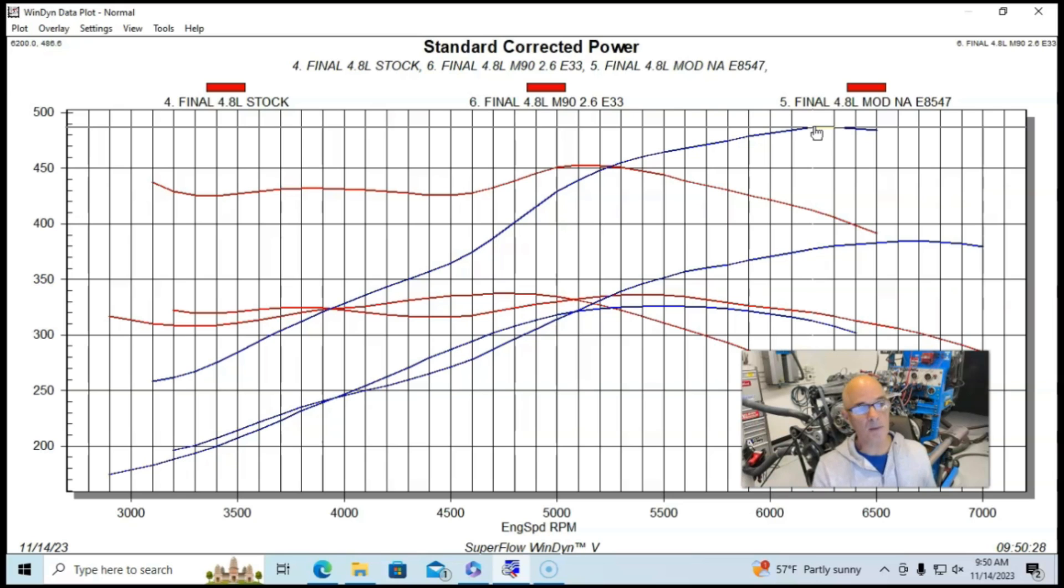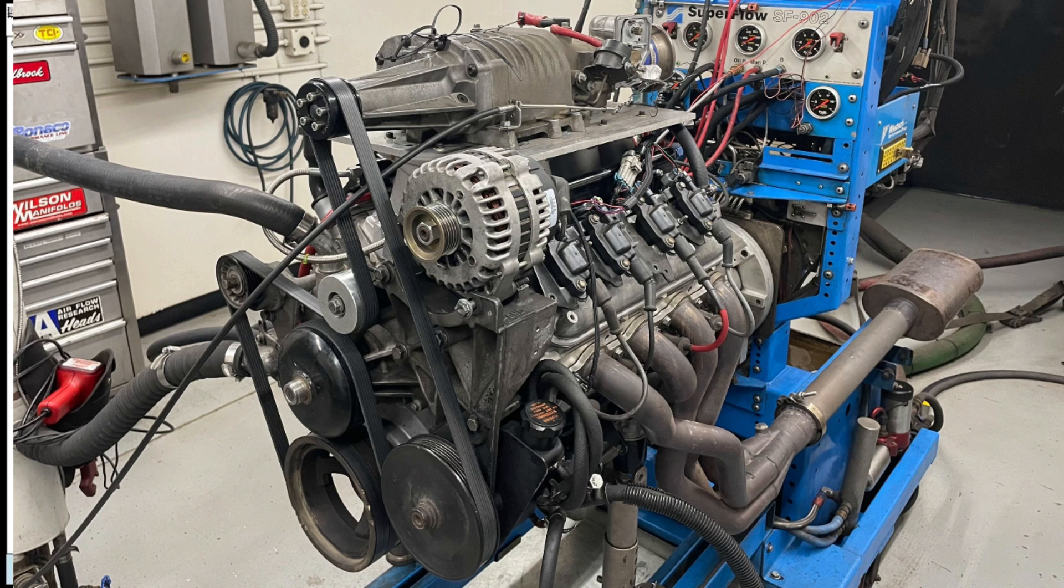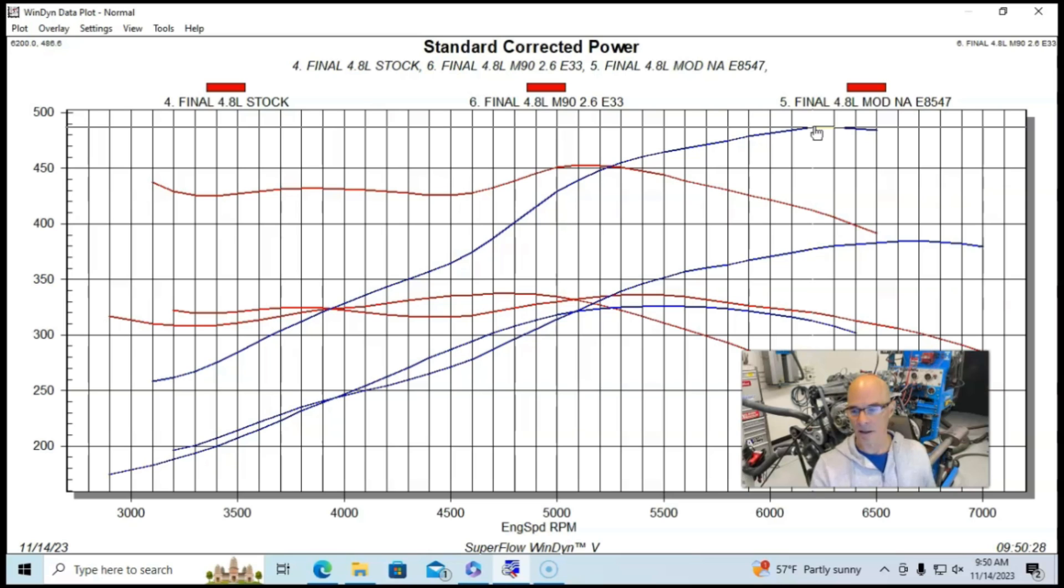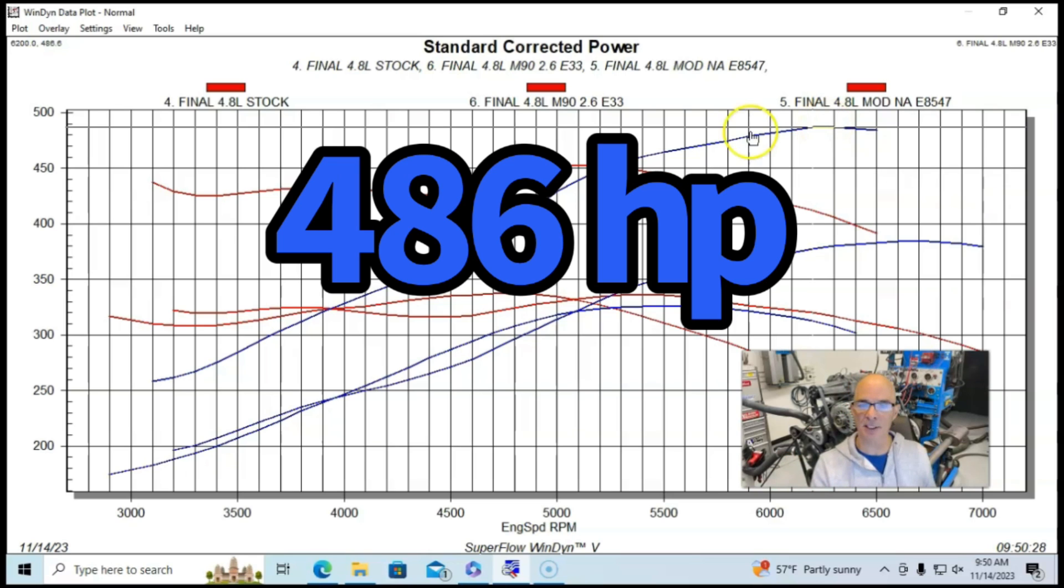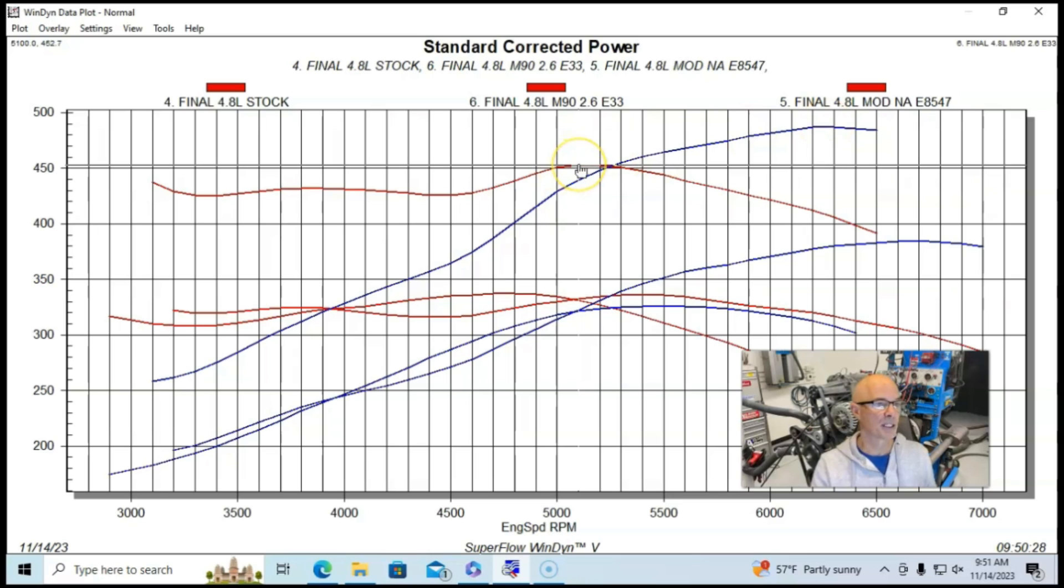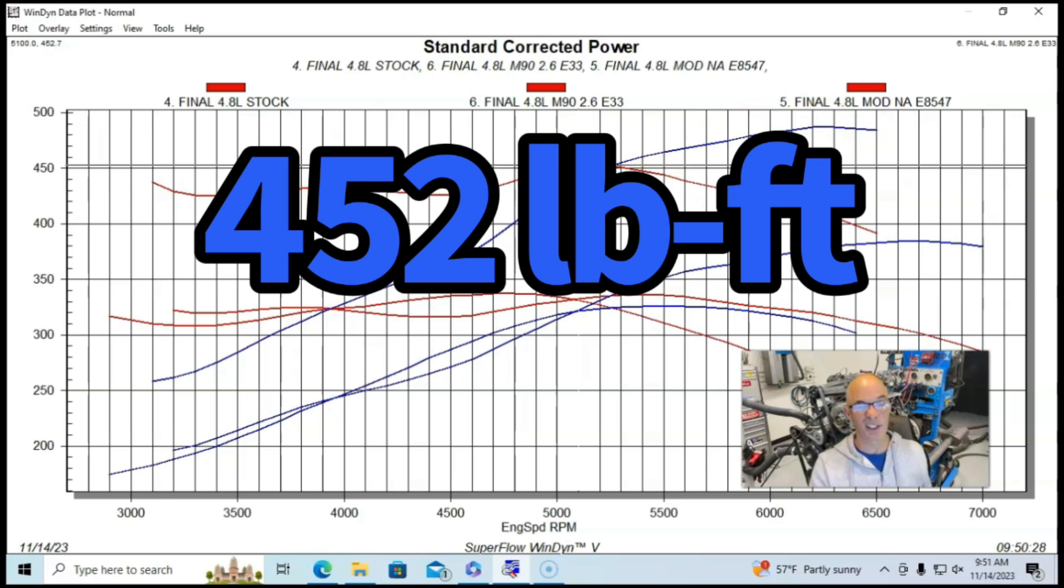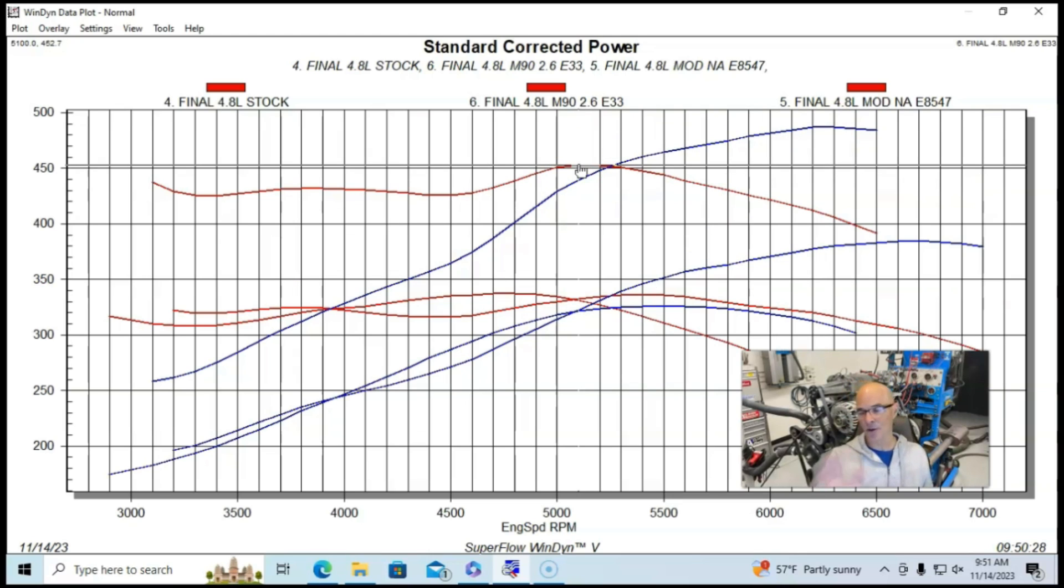Running with the M90 and the 2.6 inch blower pulley on the 4.8 liter, on our modified 4.8 liter, we got 486.6 horsepower. Peak torque checked in at 452.7 foot-pounds of torque.